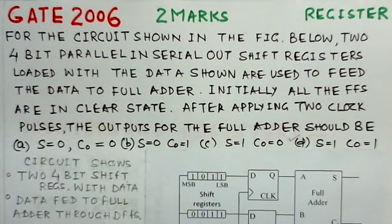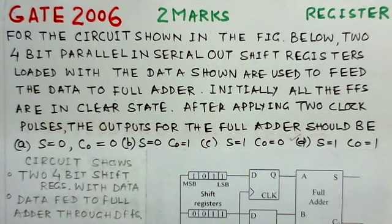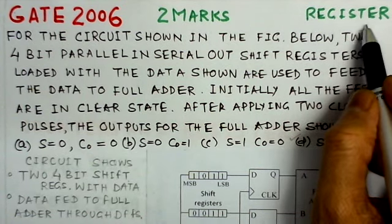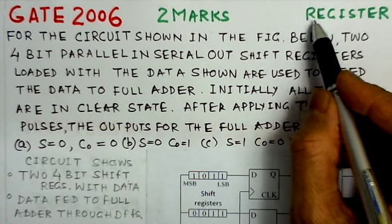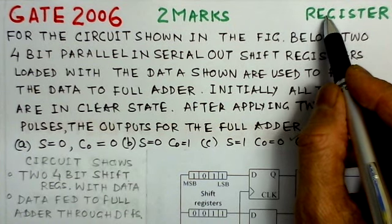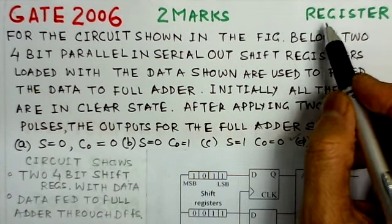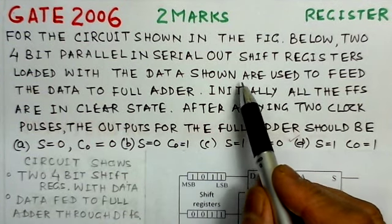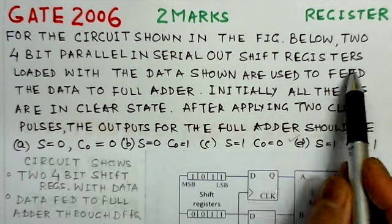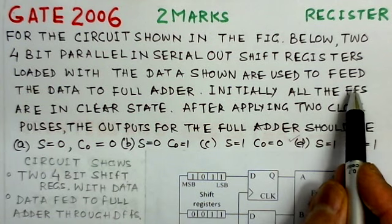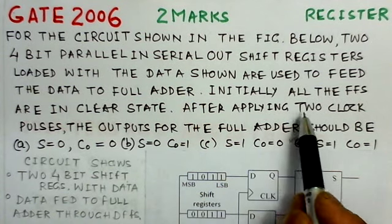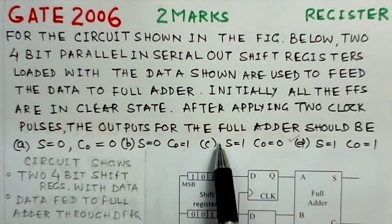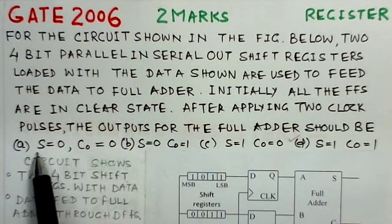This problem is the fifth and last problem of the set from the year 2006, worth two marks. It's a miscellaneous kind of problem which has registers, adders, and flip-flop circuits put together. The problem states: for the circuit shown in the figure, two 4-bit parallel-in serial-out shift registers loaded with the data shown are used to feed data to a full adder. Initially all the flip-flops are in the clear state, and after applying two clock pulses the output of the full adder should be determined.